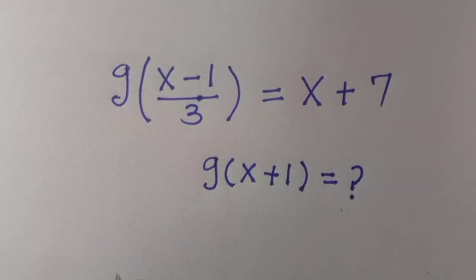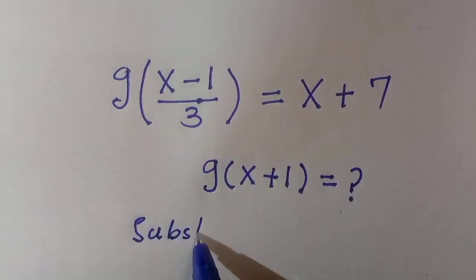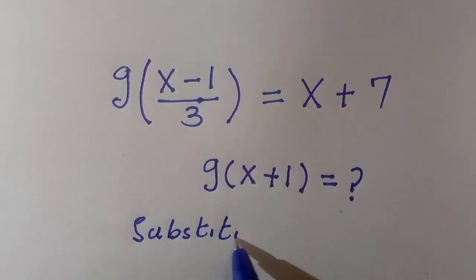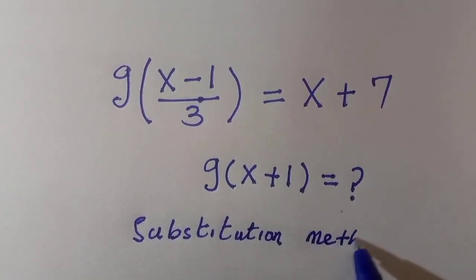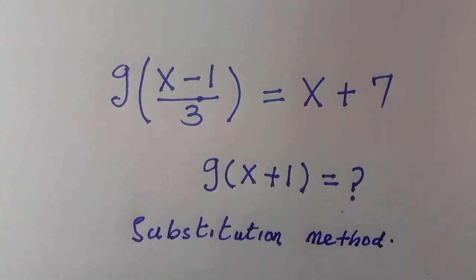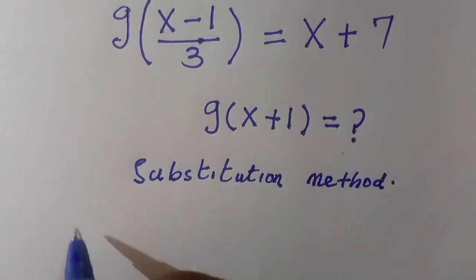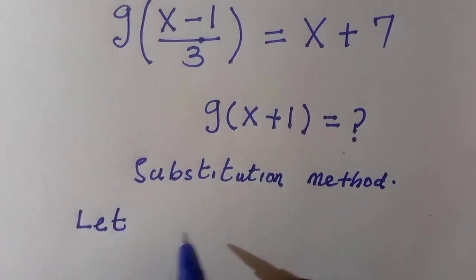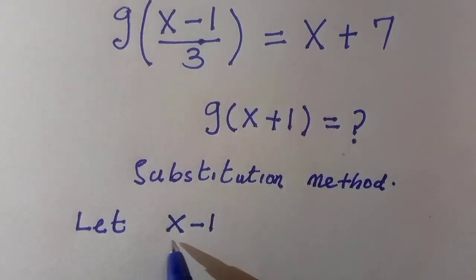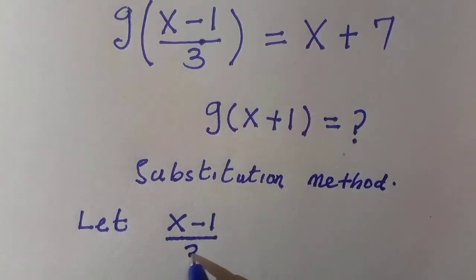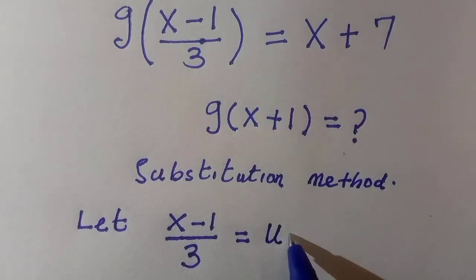What to do first is we're going to apply the substitution method, or we can simply call it u-substitution. So let's try to let (x-1)/3, we are going to let it be equals to u plus one, because what we are going to find is x plus one.